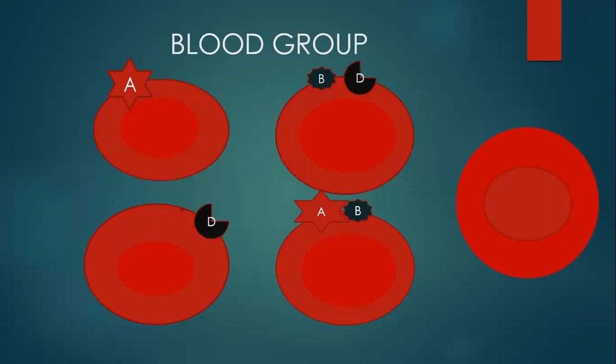We say blood group B when you have B antigen on your red blood cells, and blood group AB when you have both A and B antigens. Apart from having the antigens, you also have antibodies in your serum. If your blood group is A, you have anti-B antibodies circulating in your serum. If blood group B, you have antibodies against A. If blood group AB, you have both antigens and no antibodies against A or B in your serum or plasma.